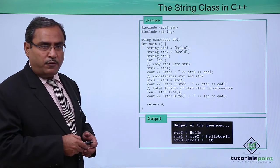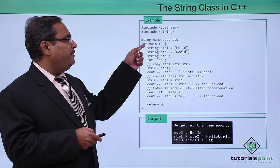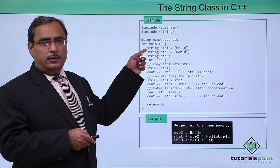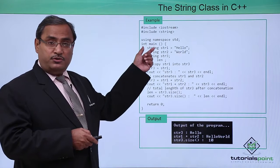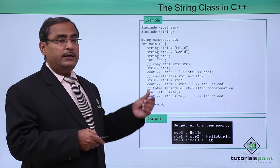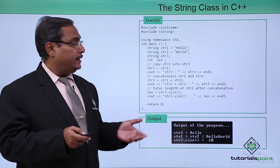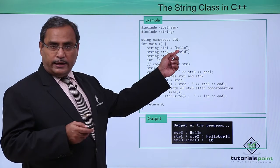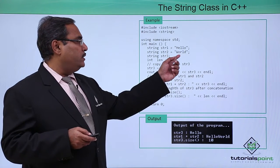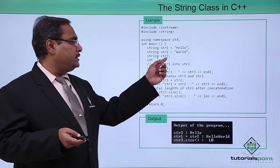Here is the code for us. We have one main function, we have defined this str1 of the type String. String is the class name, str1 will be the object. It is containing hello, str2 is containing world, str3 is as usual uninitialized.